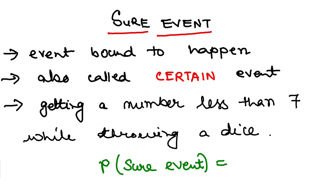The next thing that you need to understand is that probability of a sure event, this is a sure event, it is going to happen. So probability of a sure event is always 1.